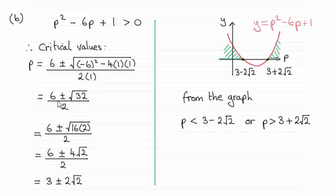Simplify this and you end up with 6 plus or minus the square root then of 36 minus 4, which is the square root of 32, and it's all divided by 2. We can then simplify root of 32. It's the same as the root of 16 times 2. Root of 16 is 4.